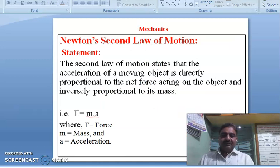Newton's second law of motion states that the acceleration of a moving body is directly proportional to the net force acting on the body, and it is inversely proportional to mass of the body. It means more mass, less acceleration; less mass, more acceleration.